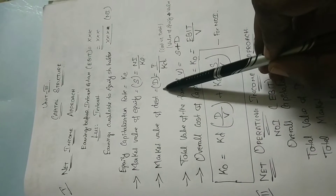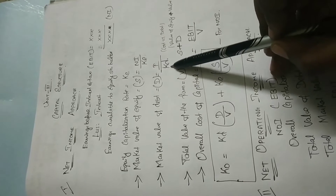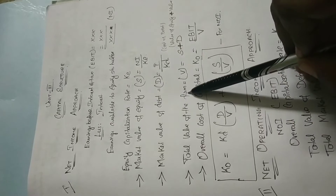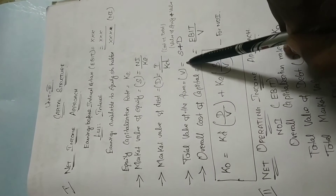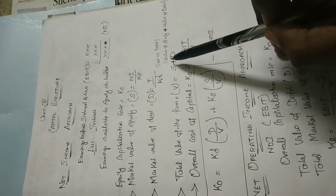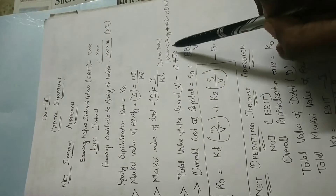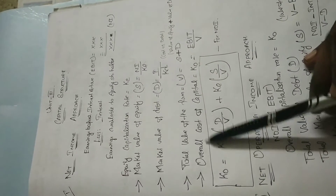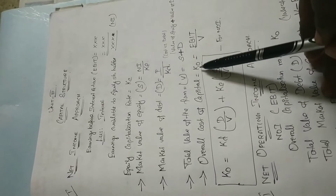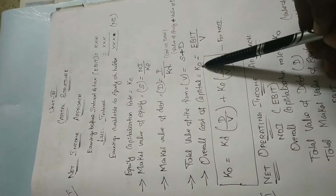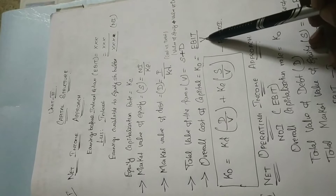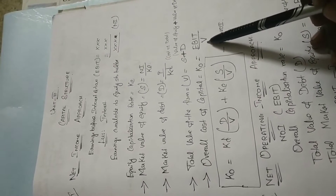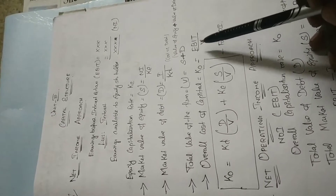Market value of debt is denoted as D, that is I divided by KD — interest divided by cost of debt. Total value of the firm is denoted as V, equal to S plus D — value of equity S and value of debt D. The overall cost of capital formula is KO equal to EBIT divided by V, that is earnings before interest and tax divided by the value of the firm.